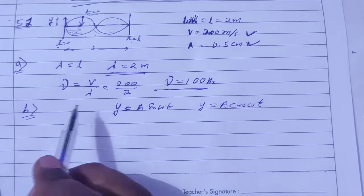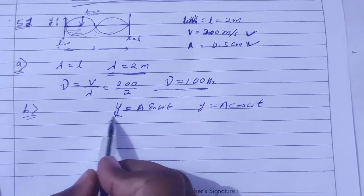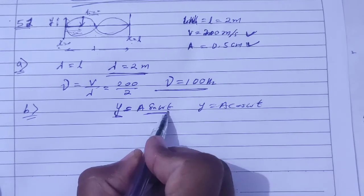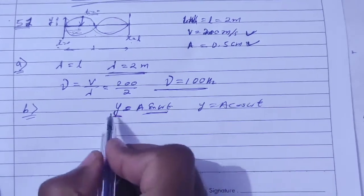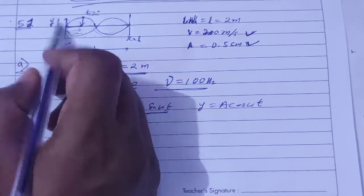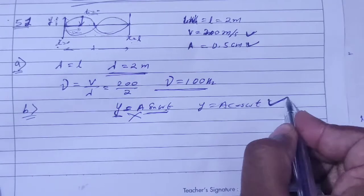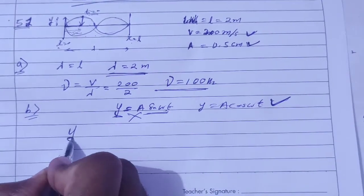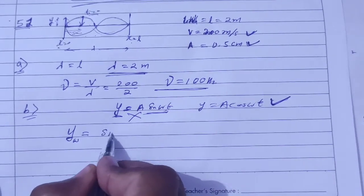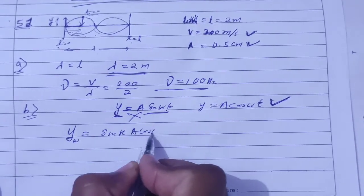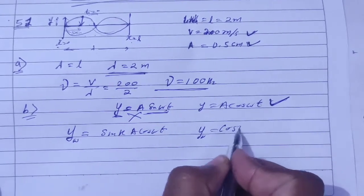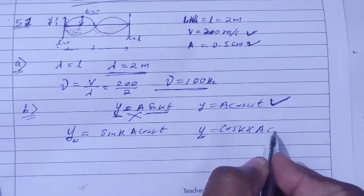Now, which form is correct for the wave equation? For the standing wave, the general forms are: y equals A sin(kx) sin(ωt), or y equals A cos(ωt), or particle equation as cos(kx) cos(ωt). We compare sin(kx) and cos(kx) forms to determine the correct one using boundary conditions.